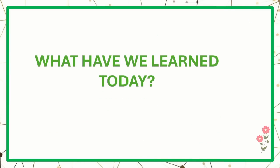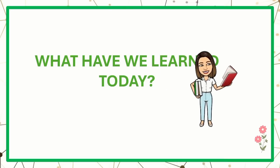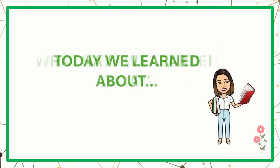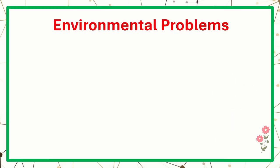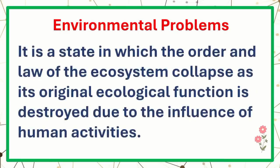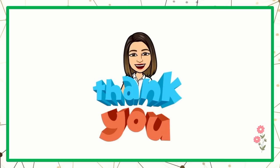What have we learned today? Today we learned about environmental problems — it is a state in which the order and law of the ecosystem collapse as its original ecological function is destroyed due to the influence of human activities. Kids, thank you for listening. I hope you have learned something. Do not forget to click the like, share, and subscribe.